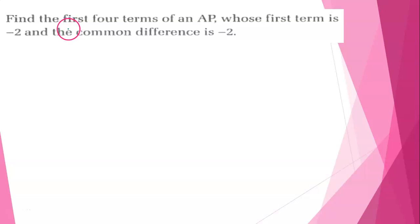Hello to everyone, welcome back to my channel. Today's question is find the first 4 terms of an AP whose first term is minus 2 and the common difference is minus 2.